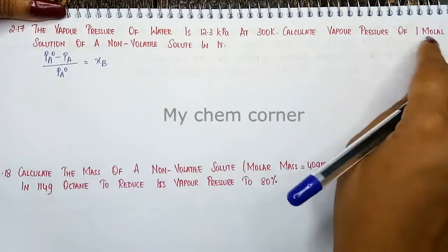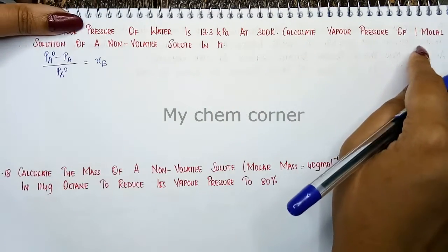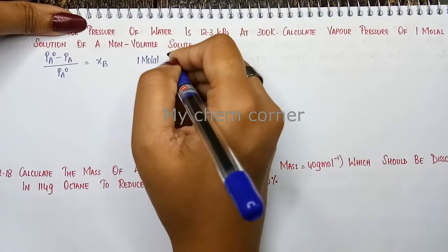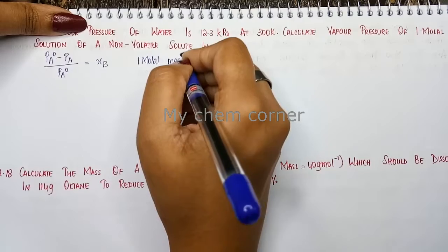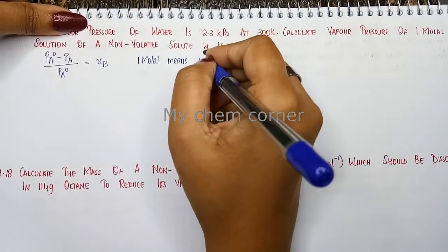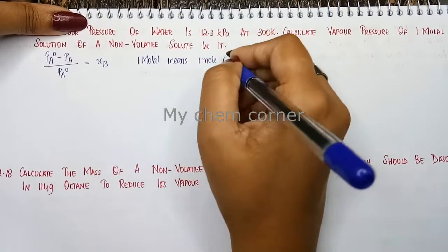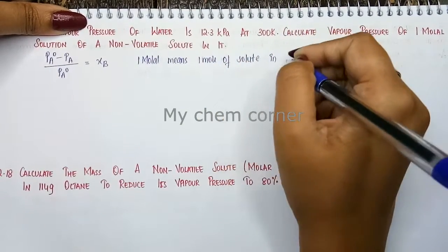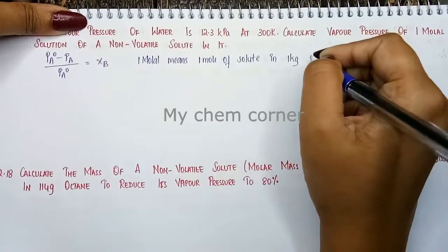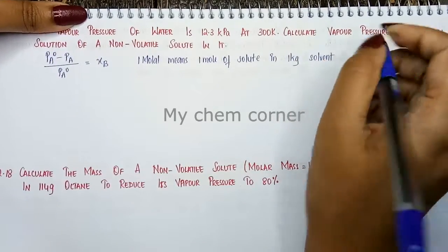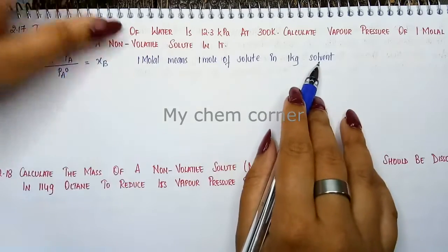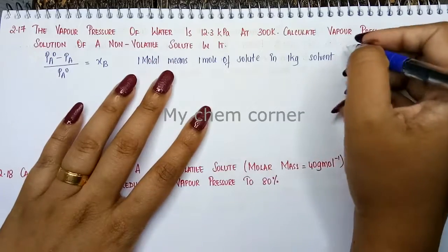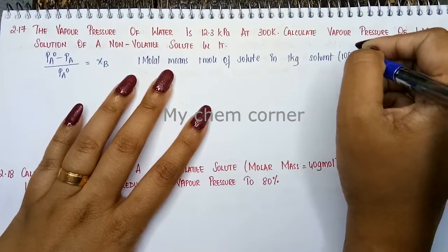Now when they say one molal solution, what is the meaning of it? One molal solution means one mol of solute in one kg solvent. In this case, in general when we say solution, the solvent has to be water and it is mentioned here also. So here 1 kg of solvent meaning 1000 grams.